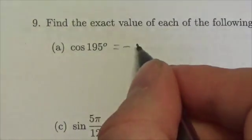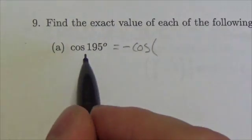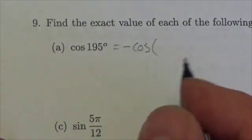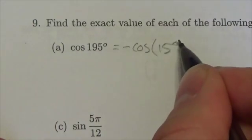So, cosine of 195 will be the negative cosine of... And then in quadrant 3, I just think 195 minus 180. My answer is going to be 15 degrees.